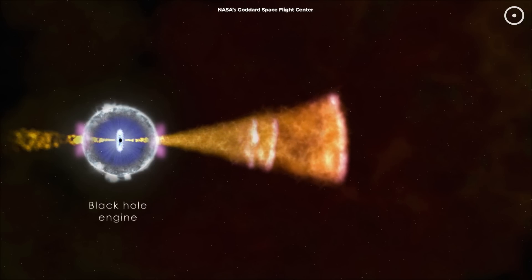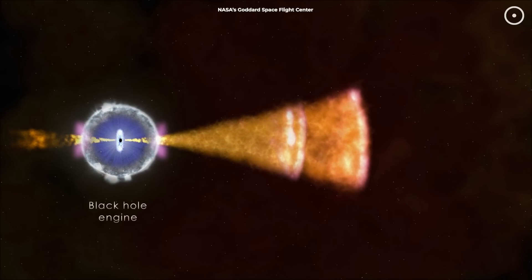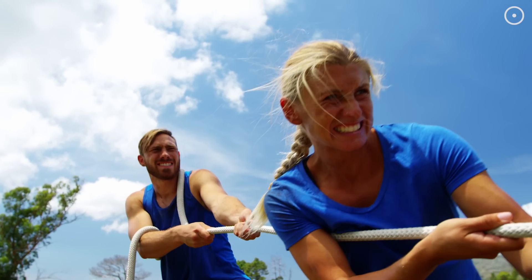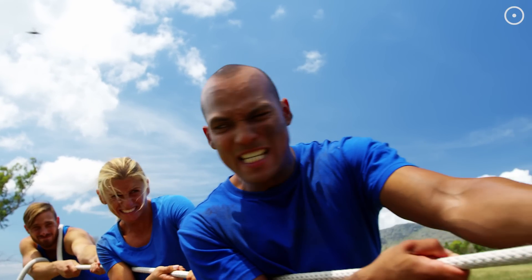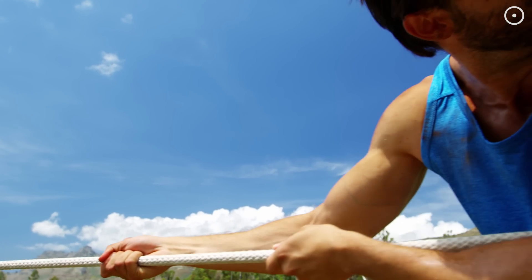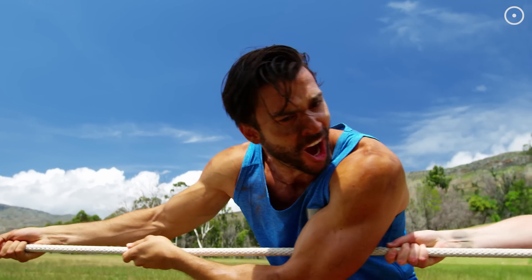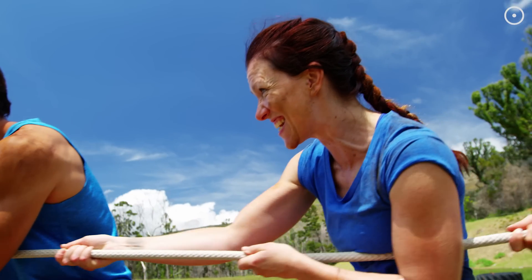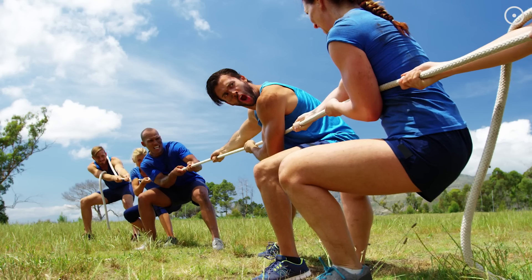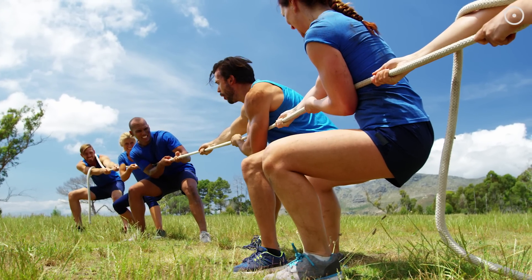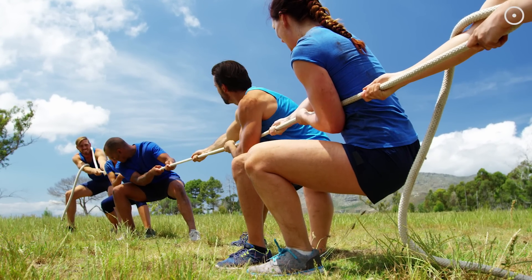Essentially, the black hole is powering the star, making it a quasi-star. Imagine it like a cosmic tug of war. On one side, you have the black hole's gravity pulling everything in, on the other, you have the energy generated by this process pushing outwards. This balance is what keeps the quasi-star stable, at least for a time.